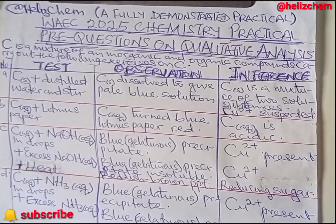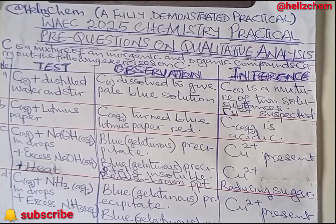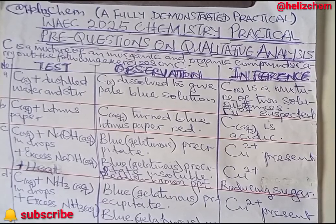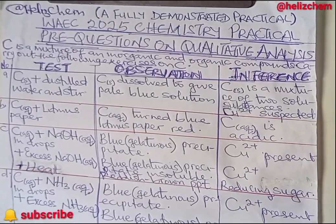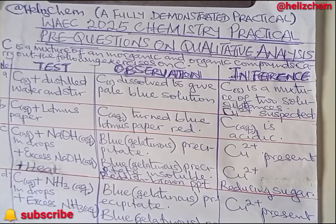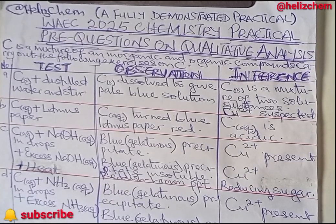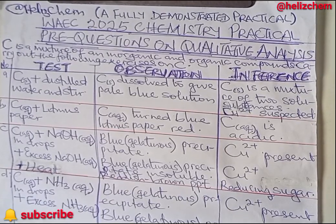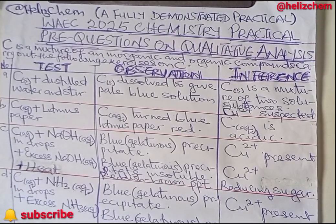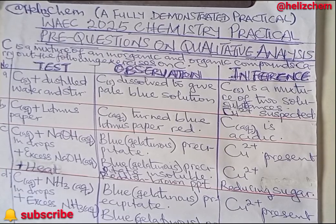C is a mixture of an inorganic and organic compound. Carry out the following exercises on C. Record your observations and inferences in the table below. I have performed this practical in the lab and that is why I am giving you the observations and inferences that I obtained as a result of the tests.